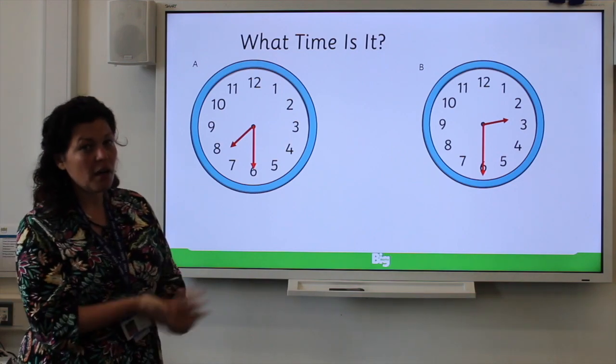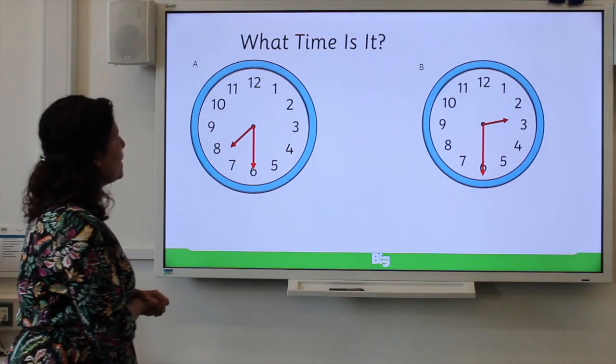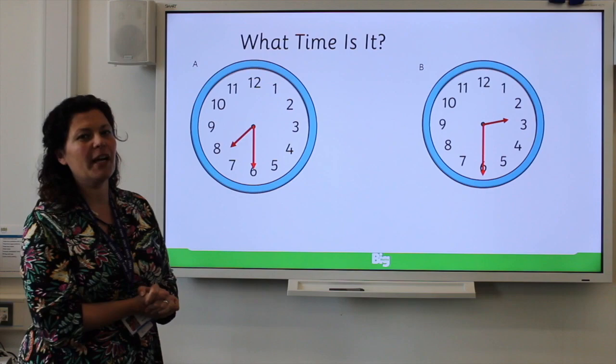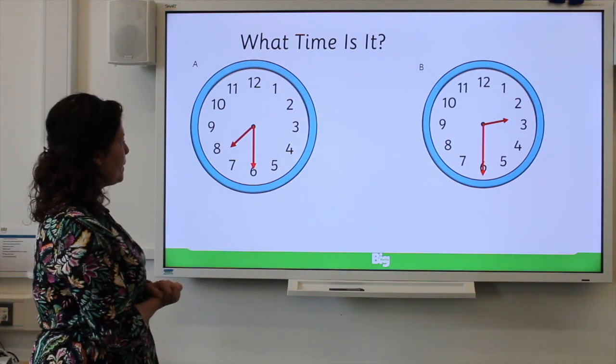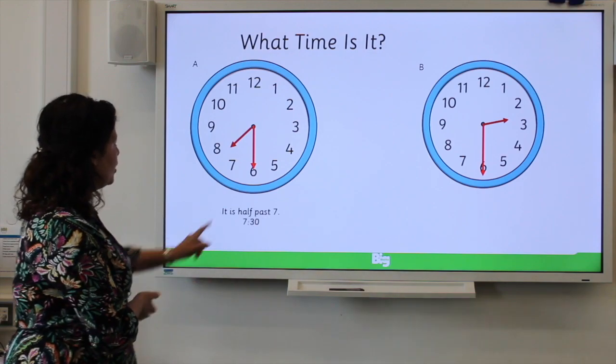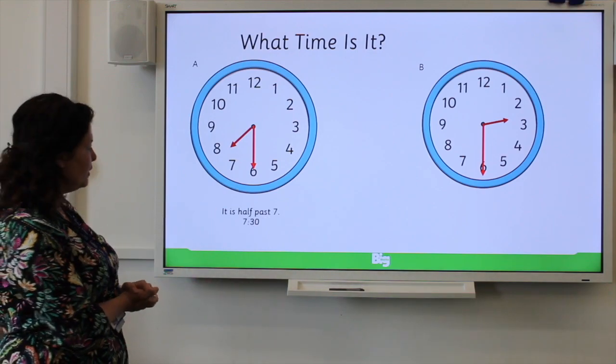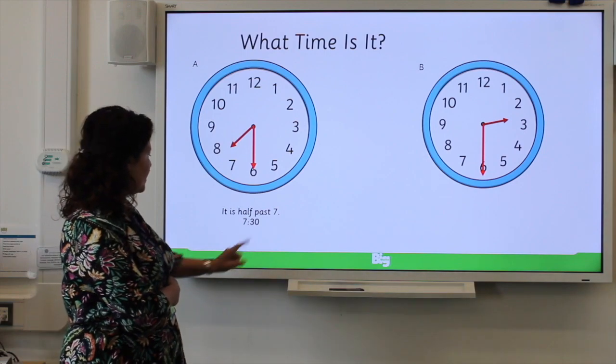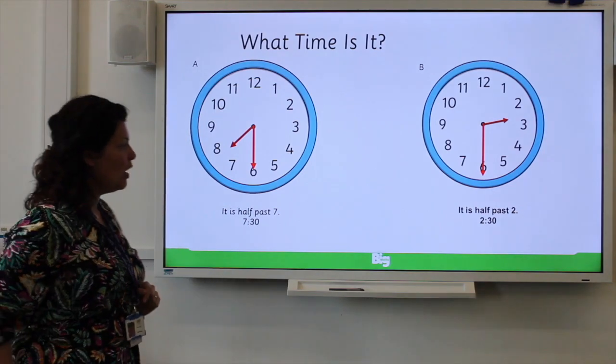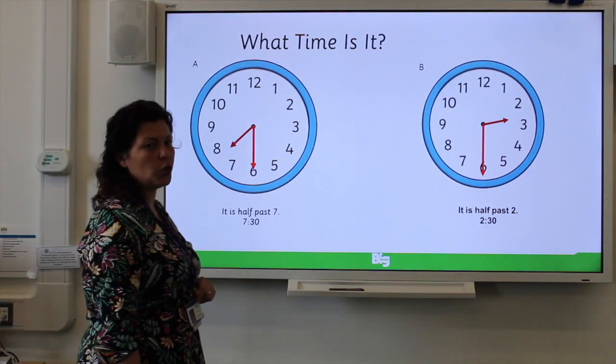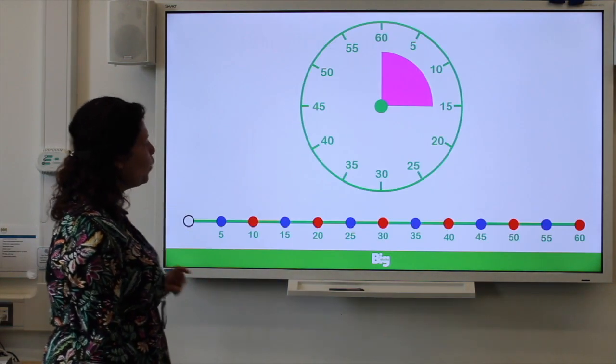With your pen and paper, pause the video and write down the times. See if you can challenge yourself to write it digitally as well. Well done. Hopefully you'd have written half past seven, which digitally would be seven thirty. And over here you'd have half past two, which would be written as two thirty. Well done.